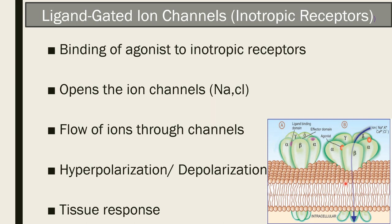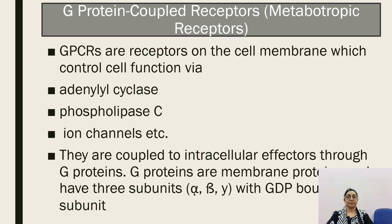Nicotinic receptors are excitatory and GABA receptors are inhibitory. The second type is the G-protein coupled receptor. These are receptors on the cell membrane which control cell function via adenylyl cyclase, phospholipase C, and ion channels. They are coupled to intracellular effectors through the G protein.